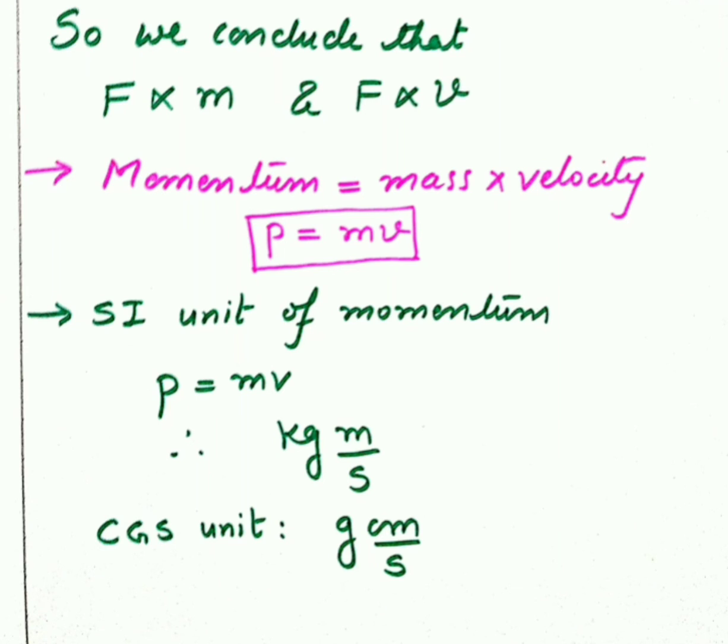Now we will see the MKS unit, that is the SI unit of momentum. We know its formula, it is mass into velocity. So what is the SI unit of mass? It is kg. What is the SI unit of velocity? It is meter per second. So the SI unit or the MKS unit of momentum is kg meter per second. And now the CGS unit, it will be gram centimeter per second. So this is what is momentum, the product of mass and velocity.